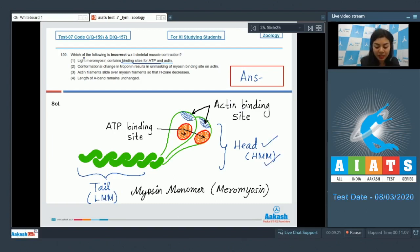Option 2 suggests that there is change in the troponin which results in unmasking of the myosin binding site on the actin. This is true and this is needed for formation of cross bridges, so this is a true statement. Option 3, that actin filaments slide over myosin filaments so that H zone decreases - yes, this is also true. During shortening of the muscle, that is contraction, the I bands reduce, the Z lines come closer, and the H zone decreases, whereas the A band retains its length. This is a true statement. Option 4, length of A band remains unchanged - this is also true with respect to muscle contraction.